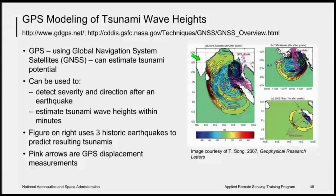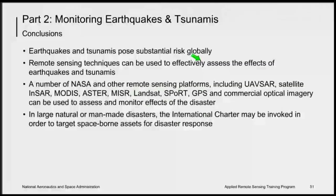In conclusion, for monitoring earthquakes and tsunamis, these pose substantial risk globally and we can use remote sensing techniques to effectively assess their effects. A number of NASA and other remote sensing platforms — including UAVSAR, satellite InSAR, MODIS, ASTER, MISR, Landsat, SPORT, and GPS — as well as commercial optical imagery, can be used to assess and monitor these effects for disaster response. The International Charter can be invoked to target these spaceborne assets for response.